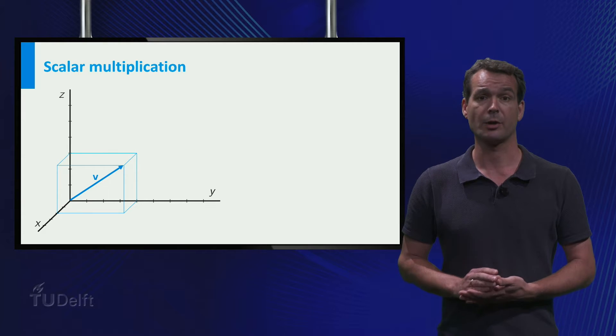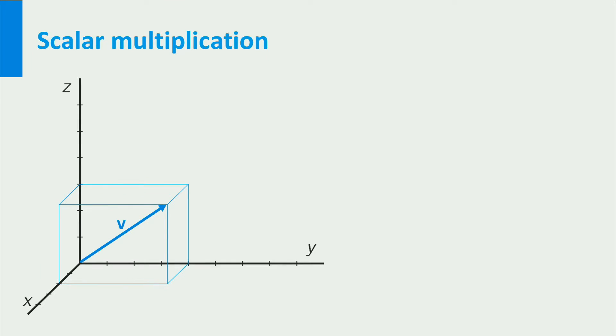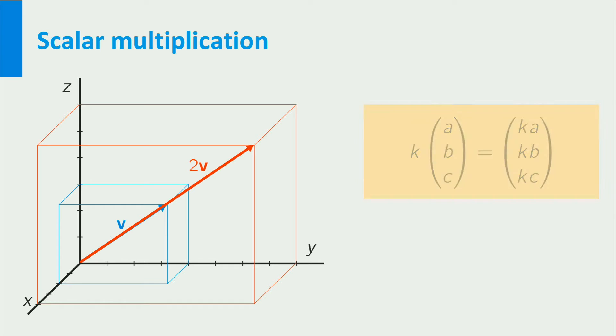So what about scalar multiplication? Well, multiplying by a positive scalar k still means that we get a vector with the same direction which has k times the length of the original vector. And if k is a negative scalar, the direction is reversed. The calculation is the same as in two dimensions. We have to multiply each component of the vector by k.